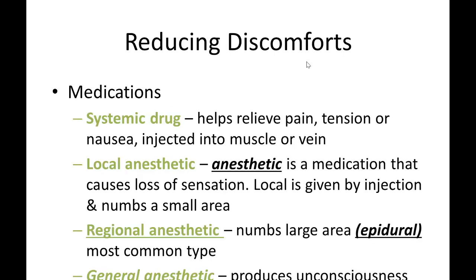To reduce discomfort during labor, there are systemic drugs to relieve pain, tension, or nausea — given intramuscularly or intravenously. There are also local anesthetics such as epidural injection. General anesthesia and spinal anesthesia are used specifically for C-section, while the first three options are for normal labor and delivery.